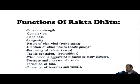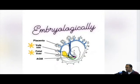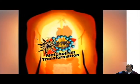The functions of Raktadatu are that which provides strength, complexion, happiness, and longevity. The principal organs of Raktavahasrottas are the liver and spleen, and as an embryo, Raktadatu is formed in the yolk sac of the liver and spleen. Because of this, Raktavah and Pitta have a special affinity for these very organs.